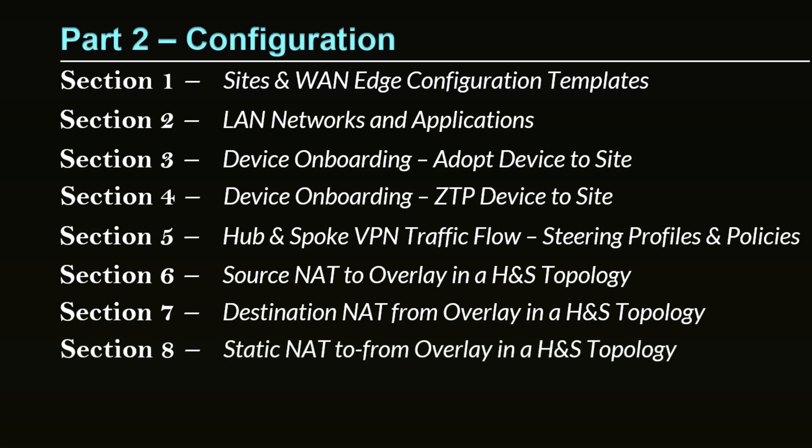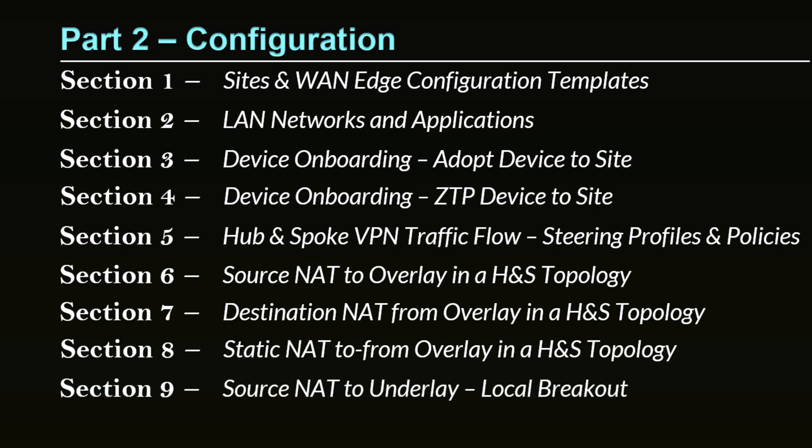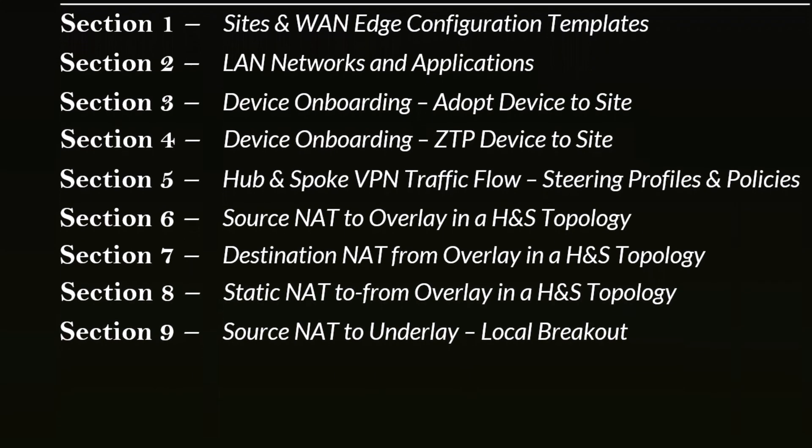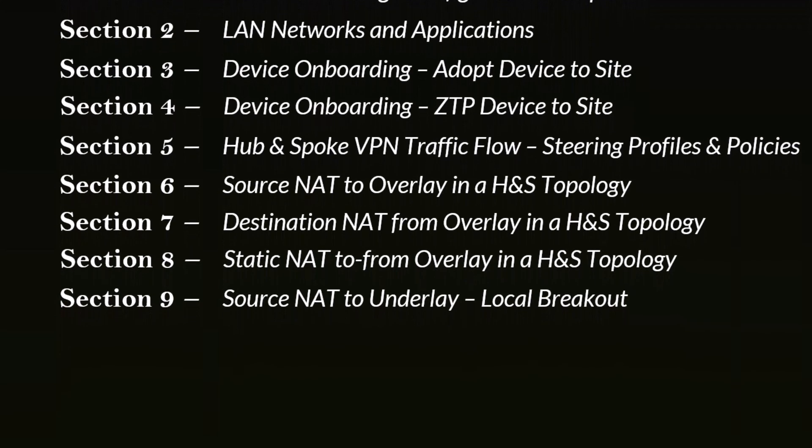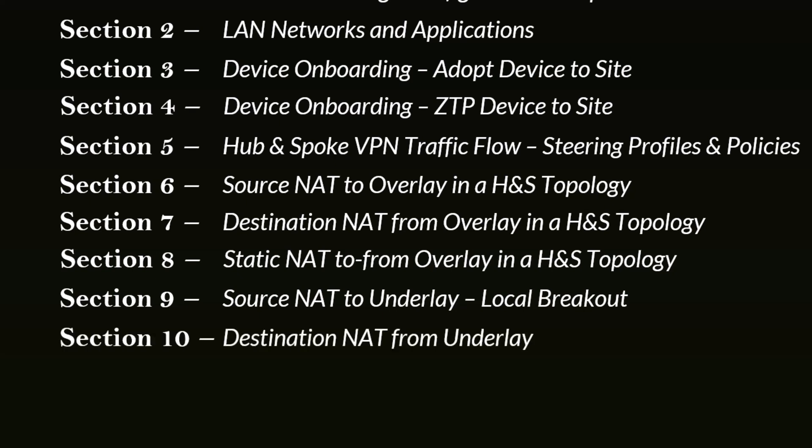Section eight is the combination between source and destination, which is referred to by SRX and Junos as static NAT, and this is again from or to overlay, meaning between spokes and hubs. Section nine is where you configure source NAT as a source NAT pool, where you do local breakout from your spoke to the internet through the underlay network. Section ten is the other way around, where you want to allow some traffic from the internet or from your underlay network going into a specific LAN segment or specific host in your data center.